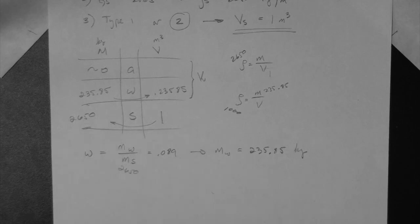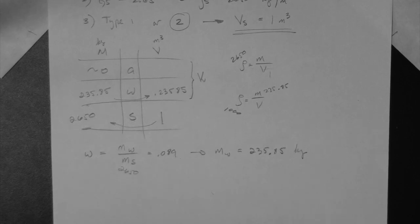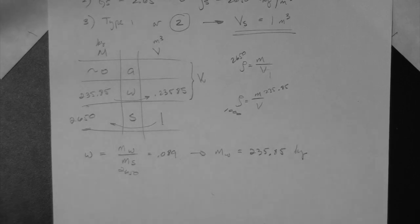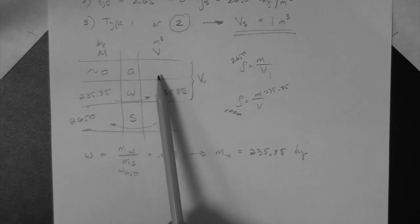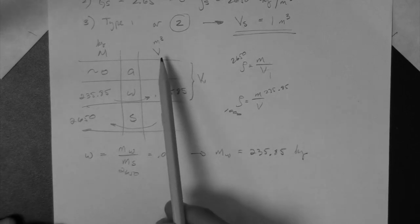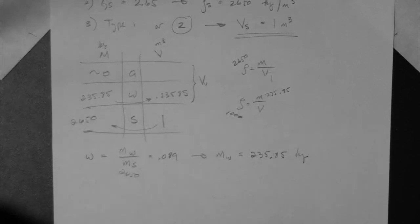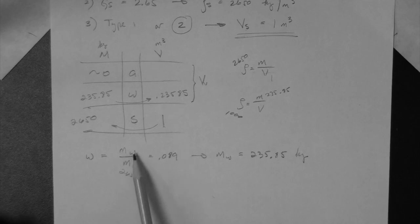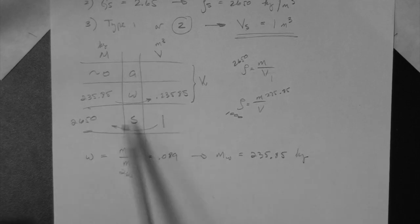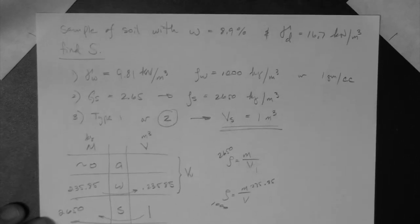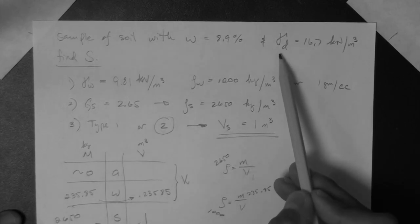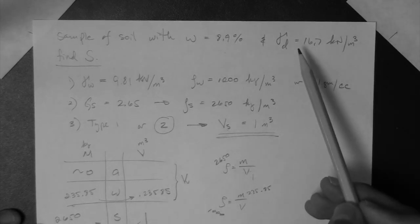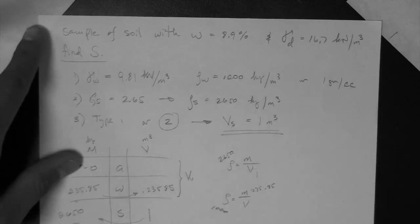Okay, what else can we do here? Well, we need the volume of air, right? And we also need the total volume and the total mass. So can we find the mass of water? We already have it, mass of solids. Let's proceed with the other thing we have. The next thing, in which case, the last thing we have, which is the dry unit weight.